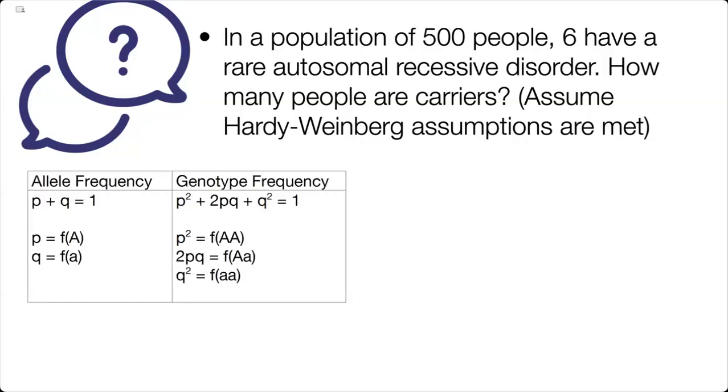So let's remind ourselves about the two equations in play. p plus q equals 1 is for allele frequencies. p squared plus 2pq plus q squared equals 1 is for genotype frequencies.